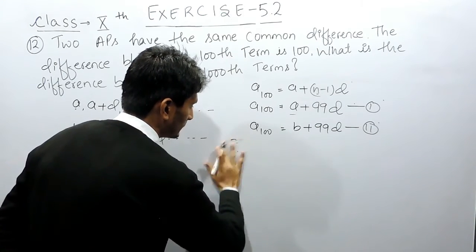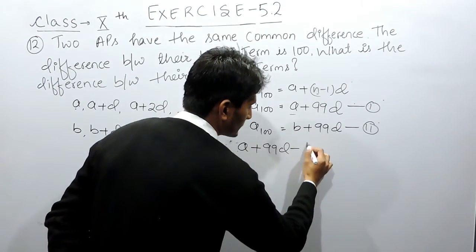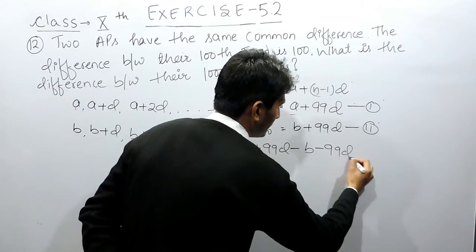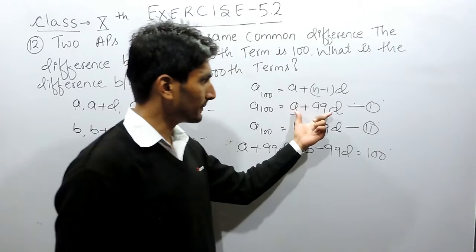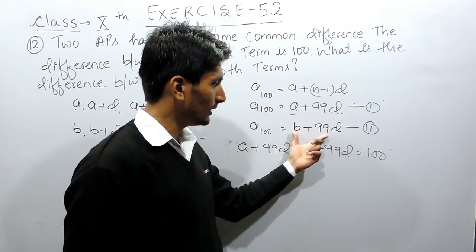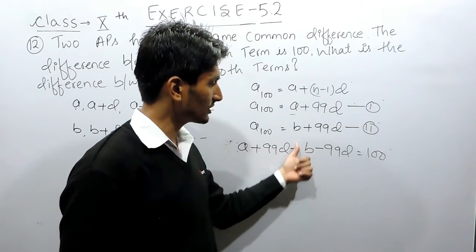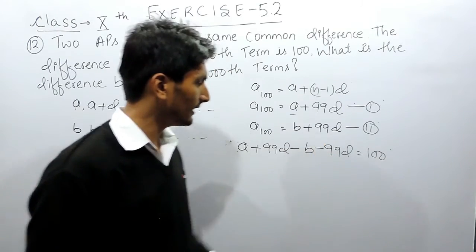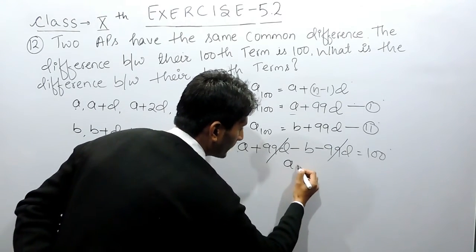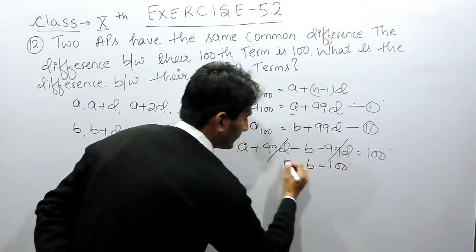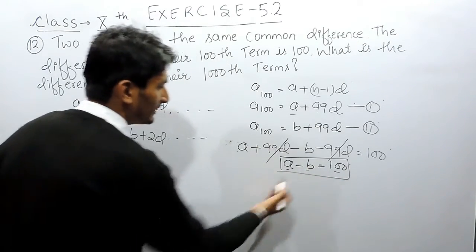So we compute: (A plus 99D) minus (B plus 99D) equals 100. There is a negative sign outside the bracket, so both signs change — A minus B minus 99D plus 99D equals 100. The 99D terms cancel out, and we conclude that A minus B equals 100.